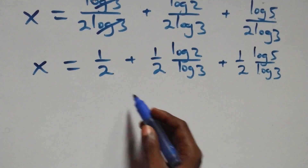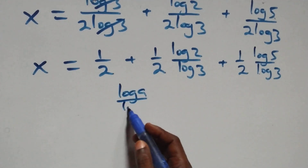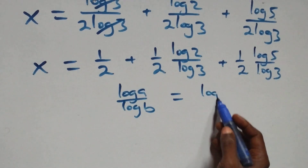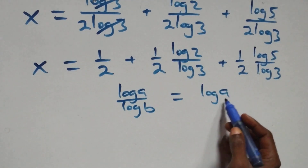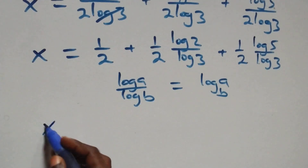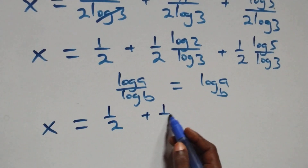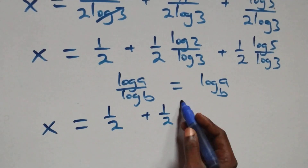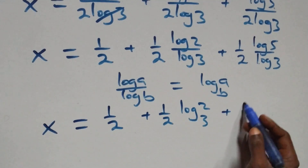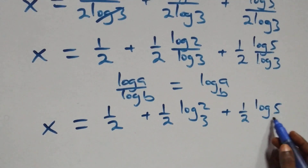When we apply the change of base formula: log 2 over log 3 is the same as log 2 to base 3, and log 5 over log 3 is log 5 to base 3. So what we have becomes x equals 1 over 2 plus 1 over 2 times log₃2 plus 1 over 2 times log₃5.